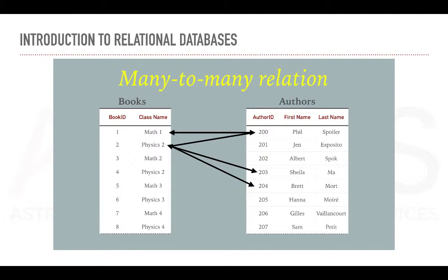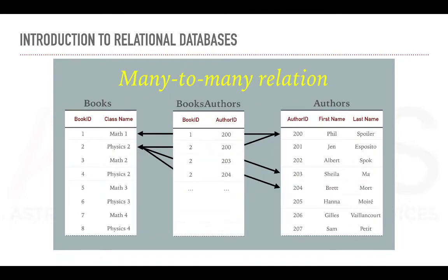Finally, we have the many-to-many relation. Here again we have two tables, a books and an authors table, and we can imagine that a single book can be written by either one or multiple authors, and that one author can write multiple books. Therefore, a many-to-many relation. In practice, a many-to-many relation is often managed with an associative table that breaks down this many-to-many relation into two one-to-many relations. In this case, the primary key of the books-authors table would be the joint columns bookID and authorID.